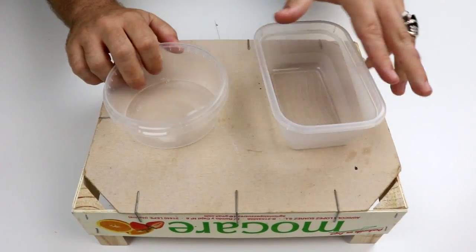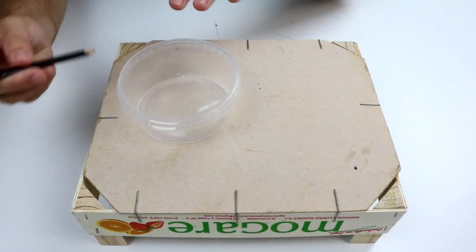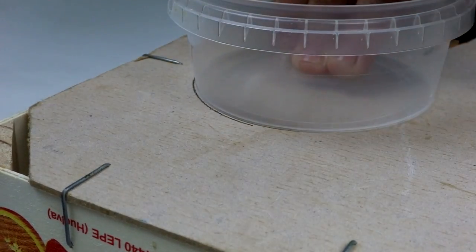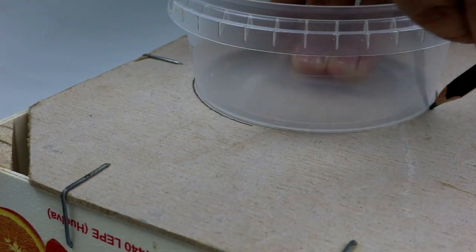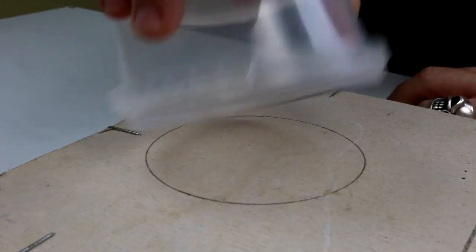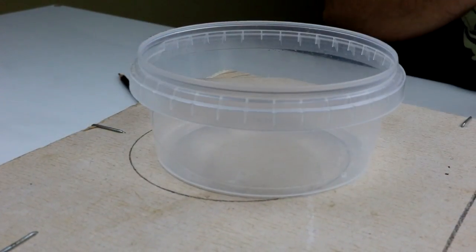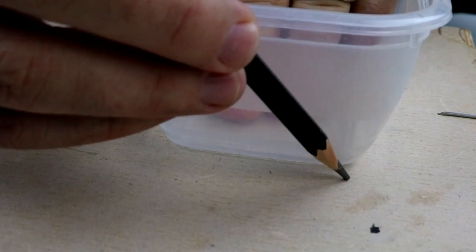To make our DIY cat feeder we'll need a box and Tupperwares. To begin with, mark the Tupperware's measurements by tracing it with a pencil on the box, like this. It's important to place the Tupperware upwards as the bowl will be held with the top ridge, and if we put it the other way round it would fall through the hole.